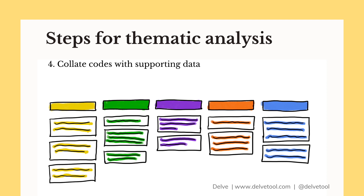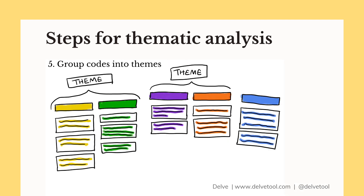This allows you to read through all the excerpts organized by code so you can gain a deeper understanding of each individual code you've developed. Adjust and revise the codes as you see fit. Once you've done that, move into step five: group your codes into themes. A theme should go beyond just describing the topic area — it should be nuanced, complex, and say something meaningful and important about your research question.